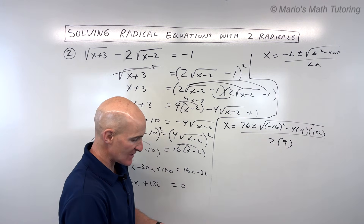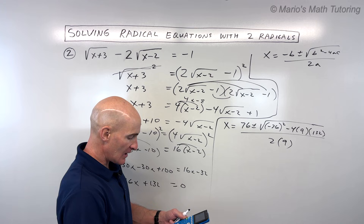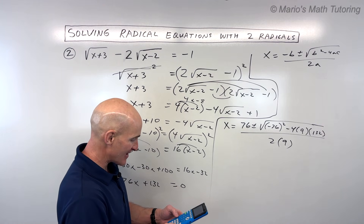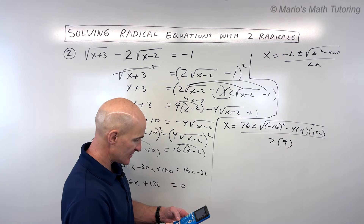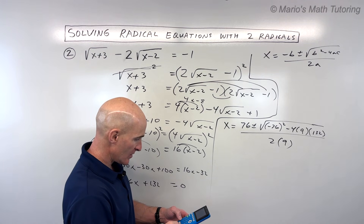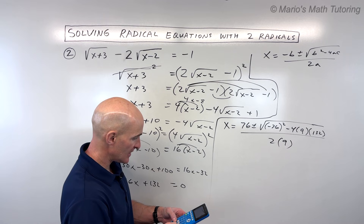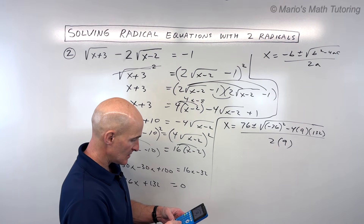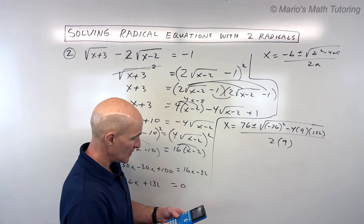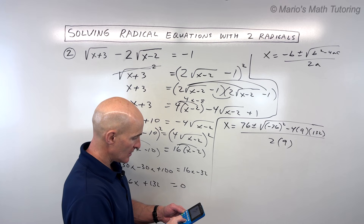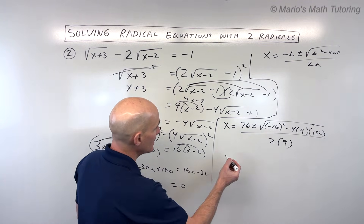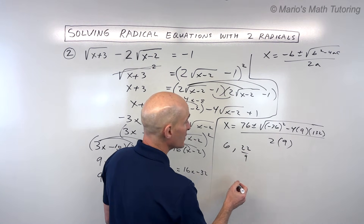Using the quadratic formula — x equals 76 plus or minus the square root of negative 76 squared minus 4 times 9 times 132, all divided by 2 times 9 — and computing with a calculator gives us x equals 6 or x equals 22 ninths.